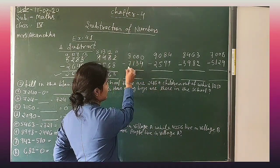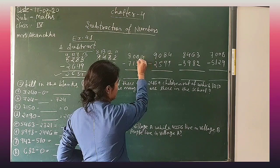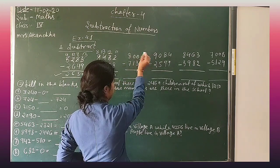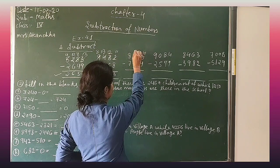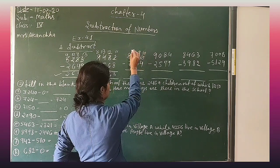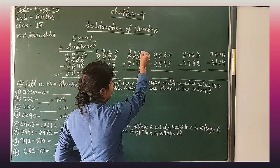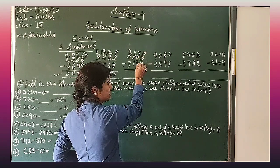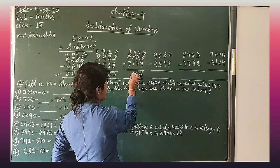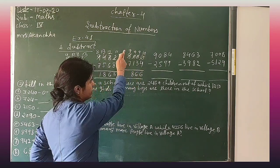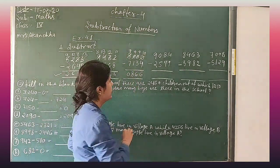8000 minus 7134. Start from the ones place: 0 — take care. Borrow: 10. Take care — this is 9, this is 9, this is 9, and this is 7. 10 minus 4 is equal to 6. 9 minus 3 is equal to 6. 9 minus 1 is equal to 8. 14 minus 7 is equal to 7.